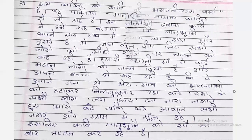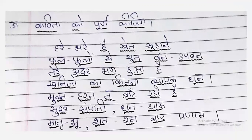Now the last section is Kavita ko poorn kijiye — complete the poem. Hare bhare hain khet suhaane, fal phoolon se yukt van upavan, tere andar bhara hua hai khanijo ka kitna vyapak dhan, mukt hasta tu baat rahi hai sukh sampatti dhan dham, matrabhumi shat shat bar pranam. If you want the explanation of this stanza, you can see my previous video in which I have explained all three stanzas.